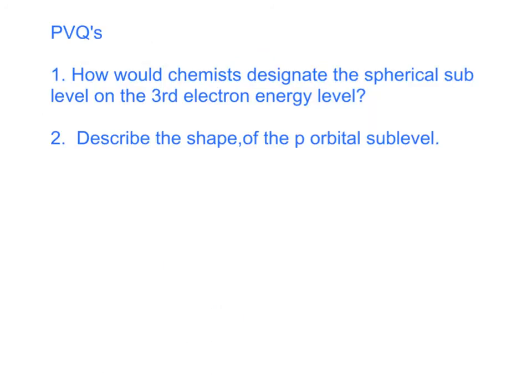Okay, as promised, we have two post-video questions for you, and I kept them both kind of on a practical level for you. Number one, how would a chemist designate the spherical sublevel on the third electron energy level? So remember, the sublevels, energy sublevels, have different shapes that we believe that where the electron is occupying someplace in that region. What is the designation for the spherical-shaped energy sublevel on the third electron energy level?